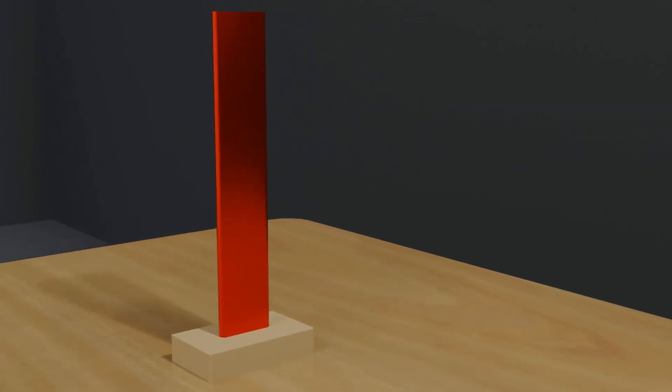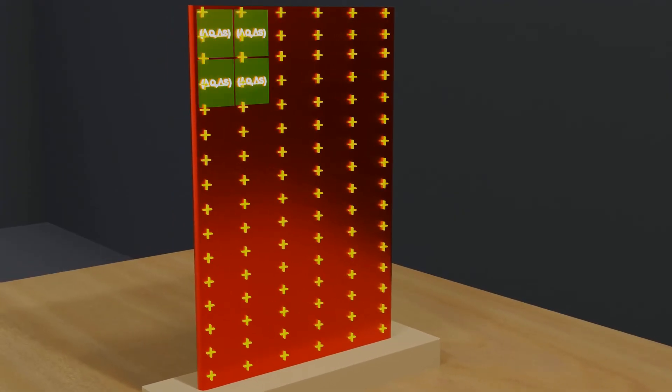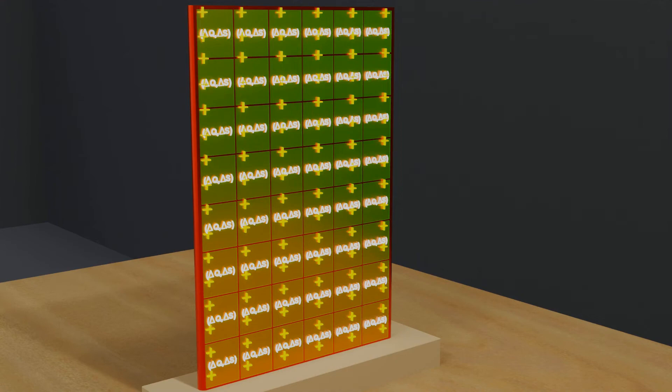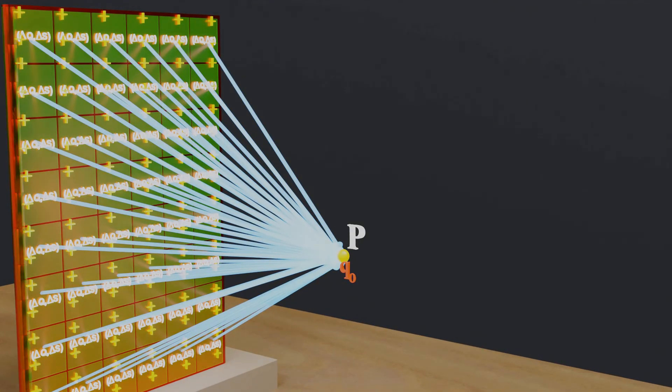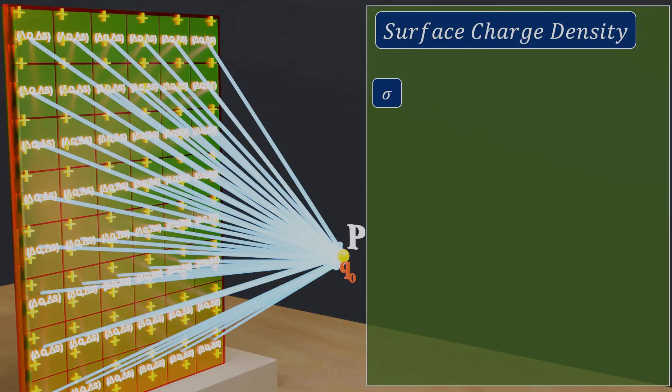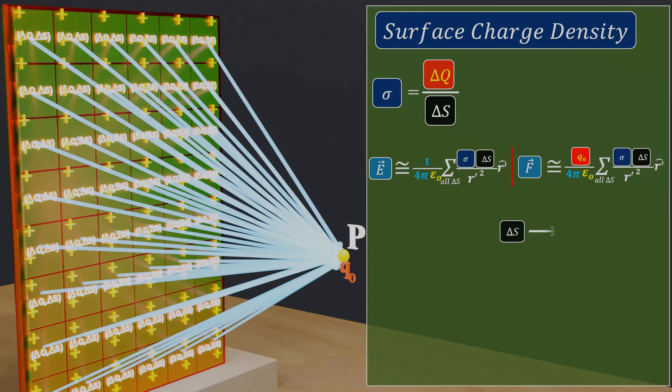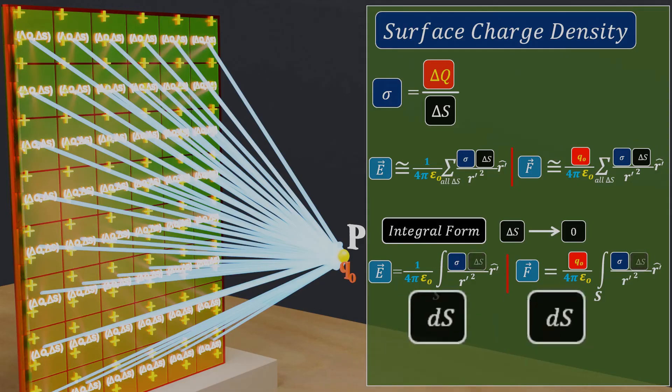Similarly, if we are given a surface charge distribution, we can take multiple small surface elements del S and del Q and use the superposition principle to calculate the electric field intensity at point P, just as we did for the wire. Just as we used lambda to denote linear charge density, we will use sigma to denote surface charge density. It will be equal to del Q by del S, indicating how much charge is present per unit area. This means that the electric field due to a surface charge will be equal to 1 upon 4 pi epsilon naught summation all del S, sigma into del S divided by r prime square. Since electric field is a vector quantity, we will multiply it by unit vector r prime cap. If del S tends to 0, we can write this equation in integral form by using dS instead of del S.